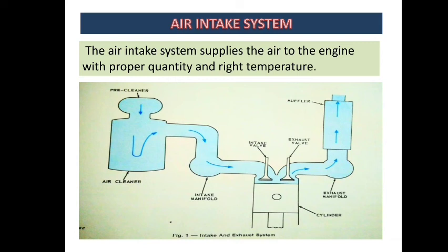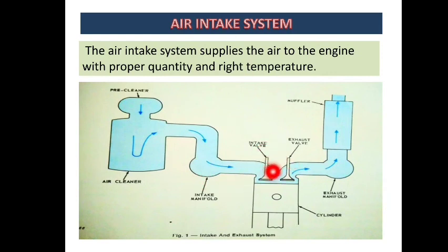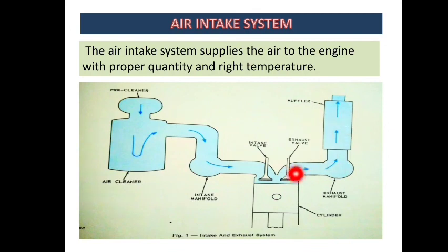The air inlet system has parts: air pre-cleaner, then air cleaner, after that intake manifold, then inlet valve — where the air comes in. There is also the exhaust valve, where the exhaust manifold is attached and leads to the muffler where exhaust gas is released. Today we will see only the air intake system part.